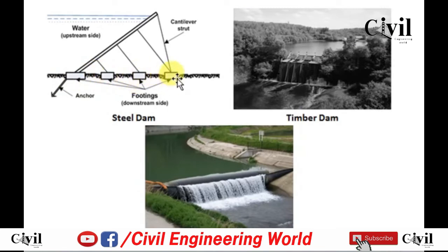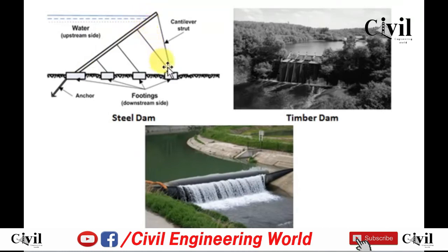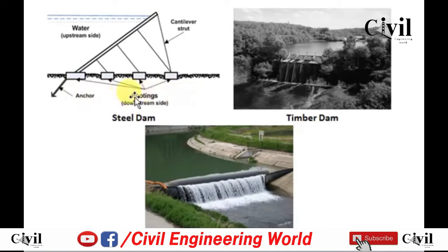There are also other types, which include steel dams. In steel dams, footings are constructed on the soil, and the upstream water is resisted by a steel member which is further supported by a cantilever strut. These steel members and foundations are anchored in the ground.